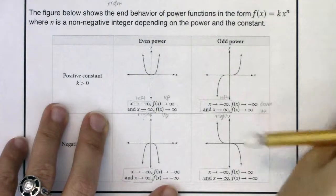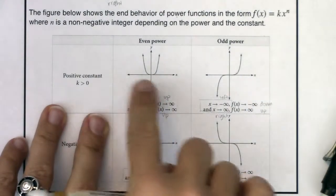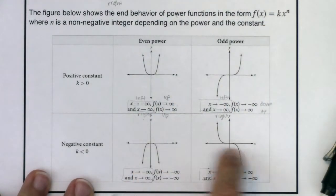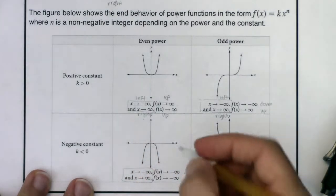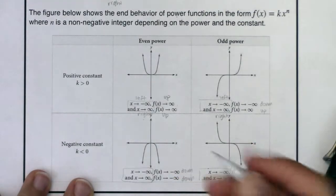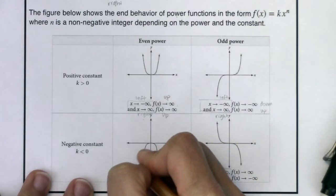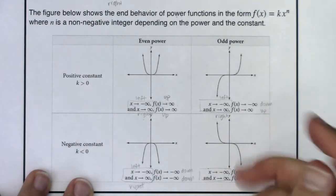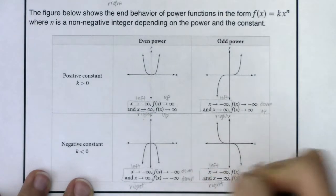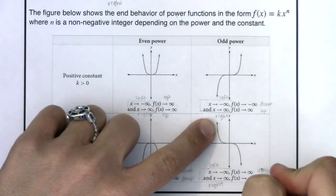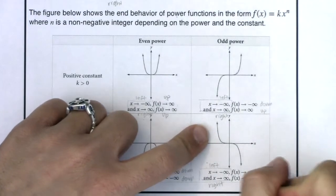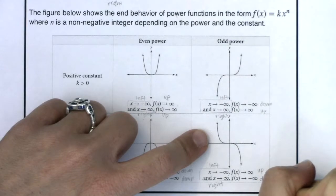Now for a negative constant with an even power, both ends go down — negative infinity, negative infinity in symbols. For a negative coefficient with an odd power, the left end is up and the right end is down. So going right is headed down. You can see all four cases forming a complete pattern.